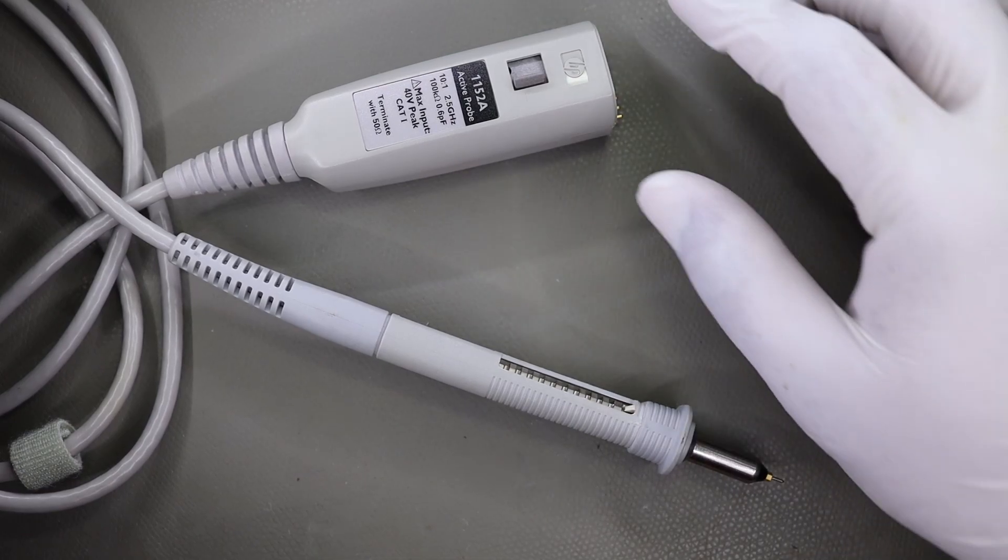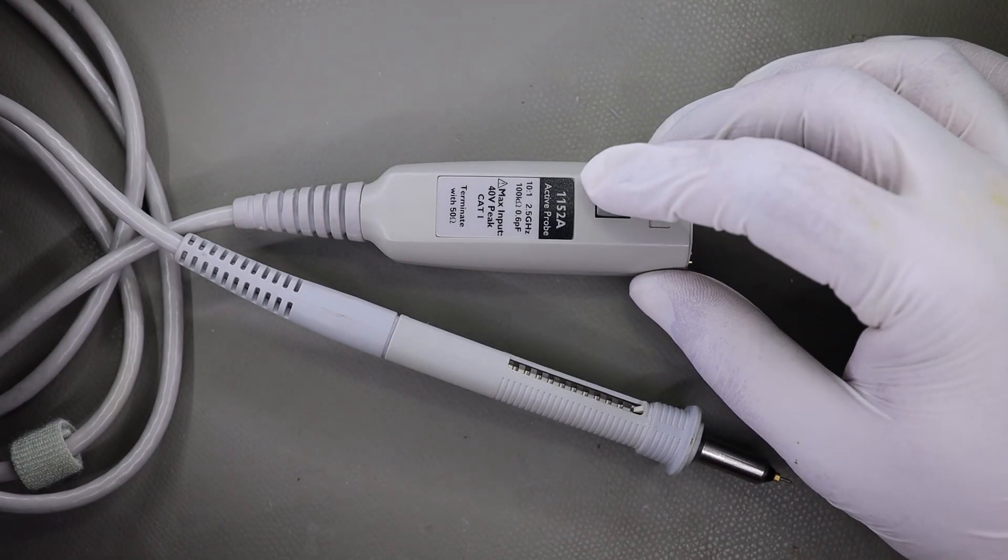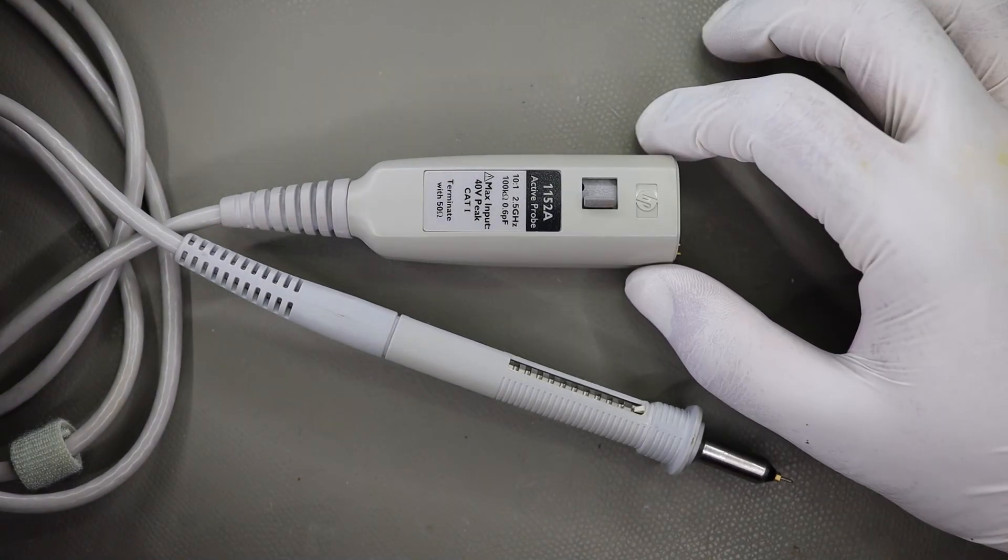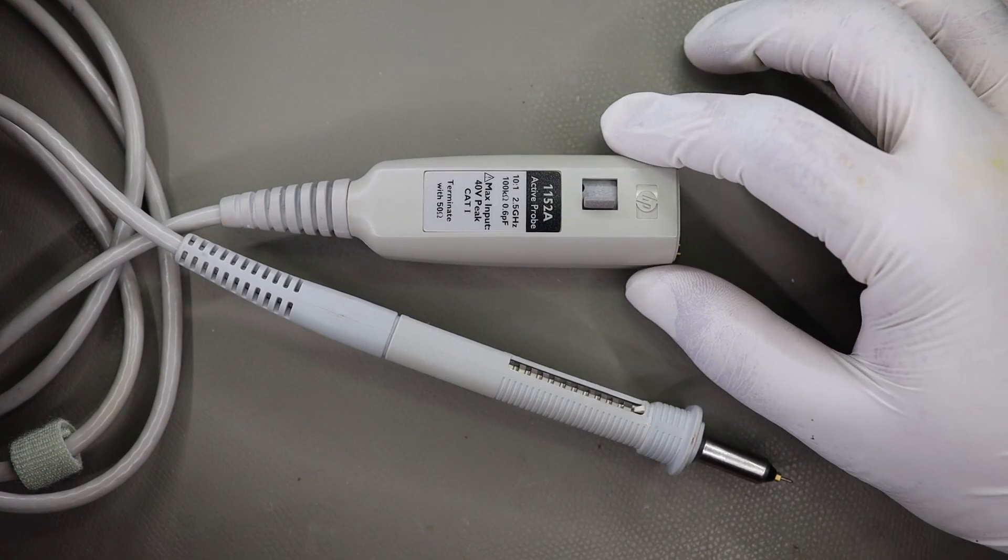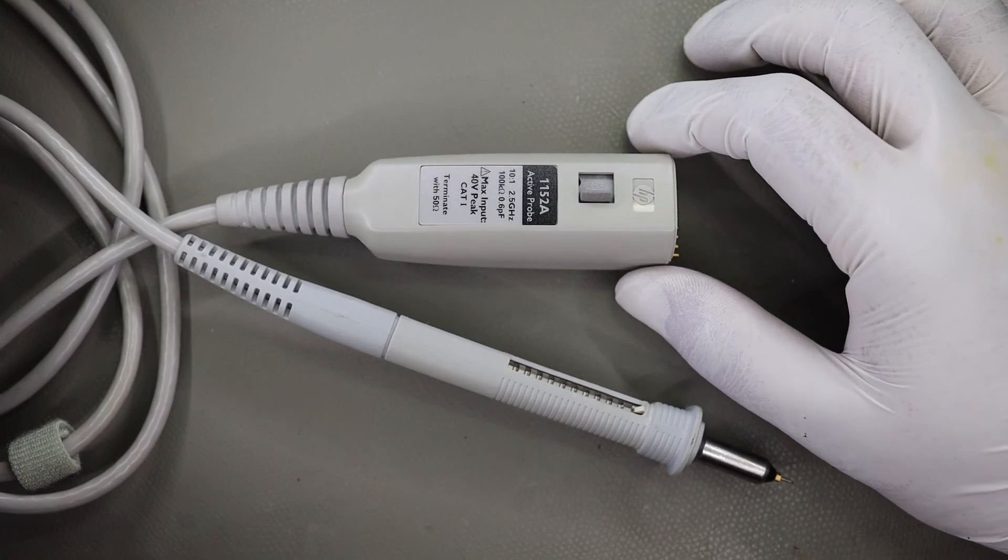Today on CircuitBelly.com I'm going to talk about this Keysight Agilent HP 1152A probe. This is a 2.5 GHz active probe which has really good performance for its price, and nowadays you can easily find this probe for relatively low price on the internet.